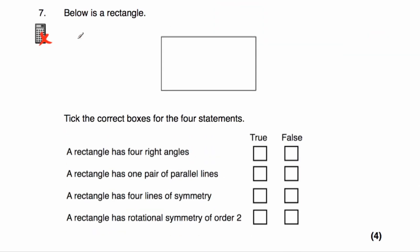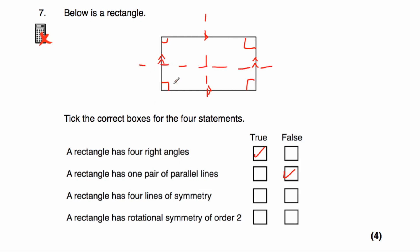Question number seven. Below is a rectangle and we have to tick the correct boxes for each statement. A rectangle has four right angles — true. A rectangle has one pair of parallel lines — false, it has two pairs. A rectangle has four lines of symmetry — false, it has two: a vertical and a horizontal. The diagonals don't work as lines of symmetry for a rectangle.